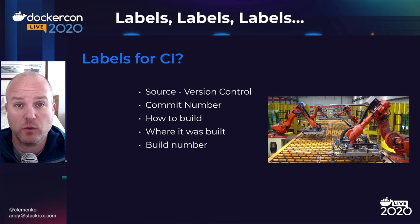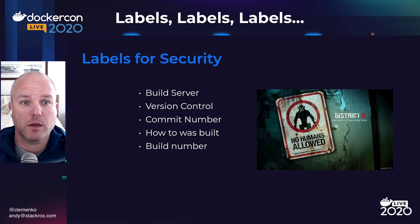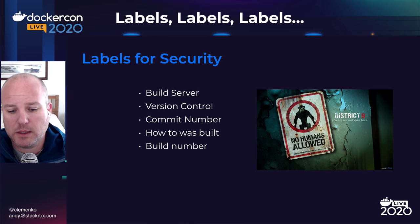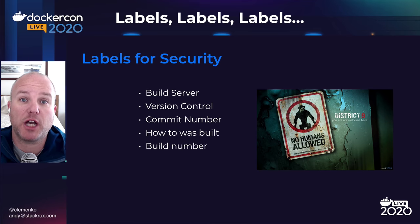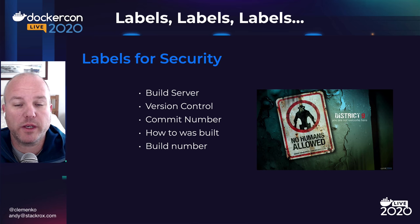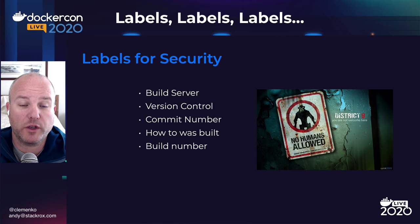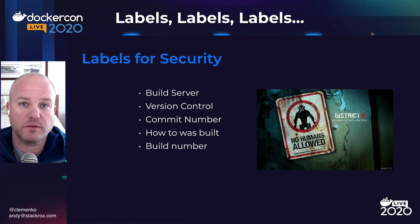These all not only talk about continuous integration, CI, but also start to talk about security. Specifically what server built it, the version control number, the commit number, how it was built, the specific build number, what the job number was in Jenkins or GitLab. What if we could take it a step further and apply policy enforcement in the build pipeline looking specifically for some of these labels? I've got a good example in my demo of a policy enforcement.